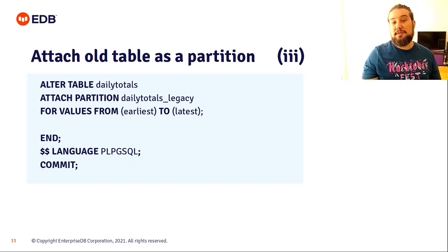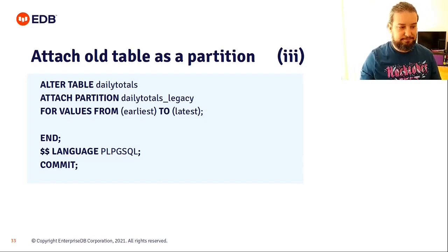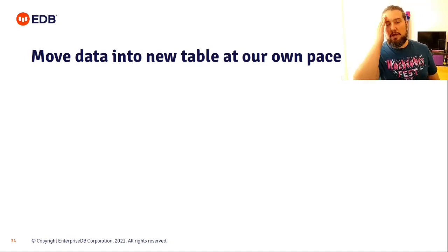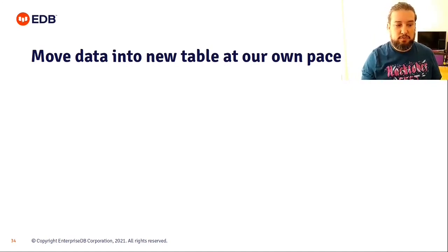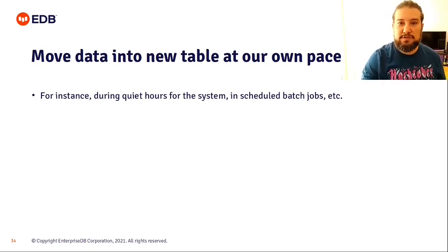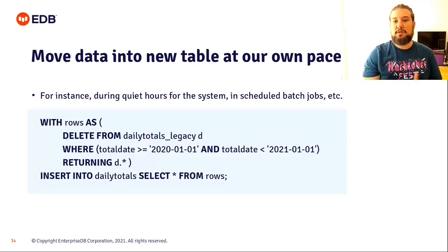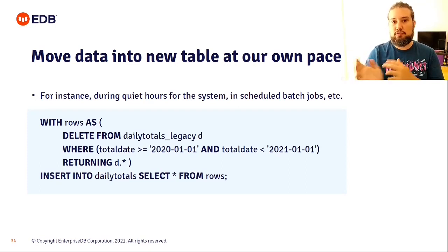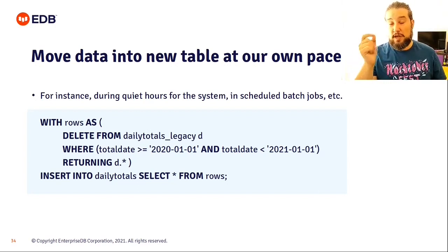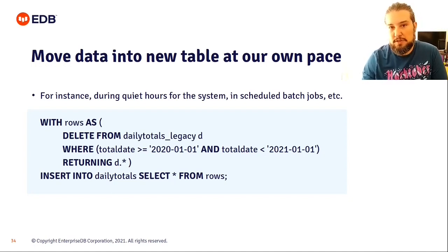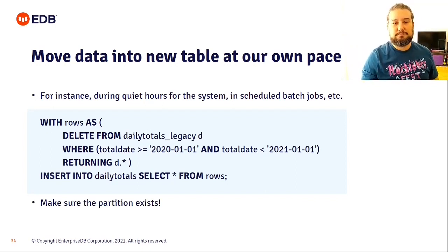You have obtained the minimum amount of locks needed and minimally disrupted the operation of your busy system. The last step is, at our own pace, moving data from the legacy table into the new partitioned table — during quiet hours or with scheduled batch jobs. You do this by deleting from the legacy table for a specific date range using DELETE ... RETURNING, simultaneously inserting those returned records into the partitioned table. That's how you do it with minimal disruption — records disappear from one table and appear in the other. Make sure the destination partition exists before you move the data.